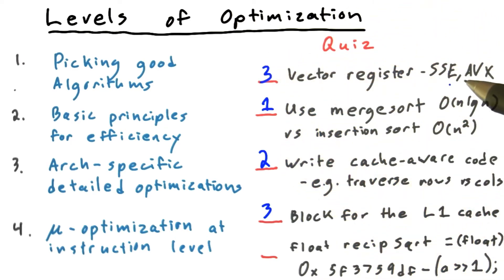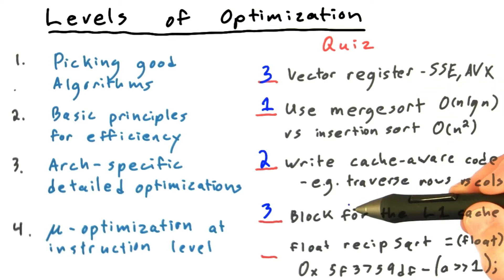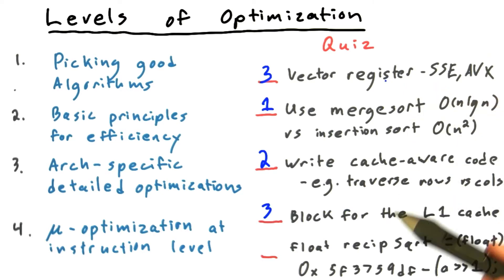Not every CPU has SSE. Some have AVX. Some don't have either. So the use of vector registers, the choice of blocking for the L1 cache—cache blocking—I would consider these architecture-specific detailed optimizations.